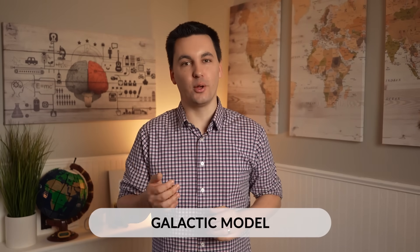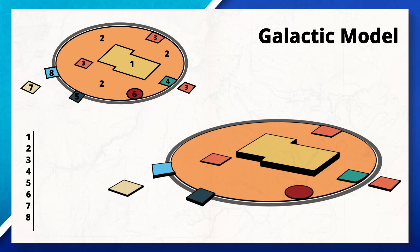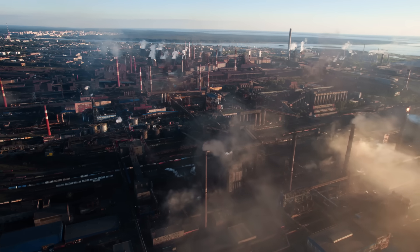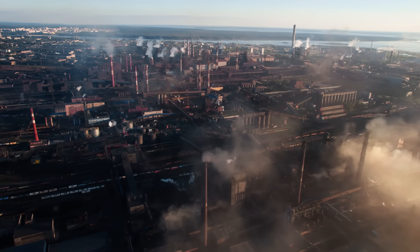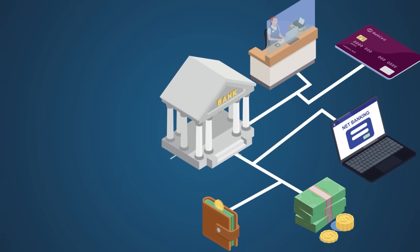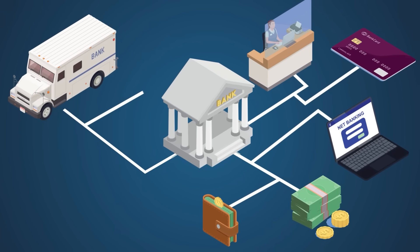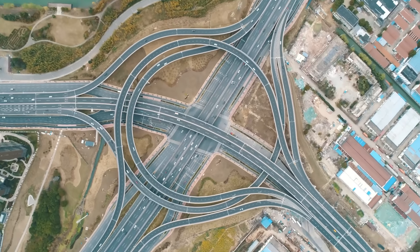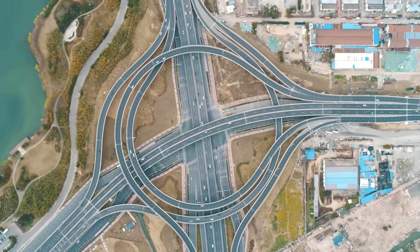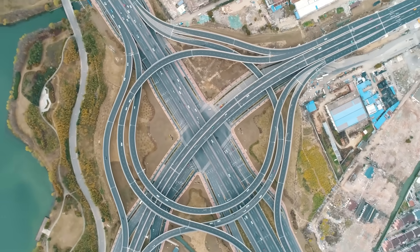The next model we have is the Galactic Model, also known as the Peripheral Model — definitely an awesome name for a model. This model was developed in the 1960s and looks at a post-industrial city where the economy is no longer focused around manufacturing; in fact, it has shifted to be more service-based. The Galactic Model also accounts for advancements in technology and transportation, and accounts for the fact that people now live farther outside of the city's boundary and can travel into the city thanks to robust infrastructure systems that have been created.